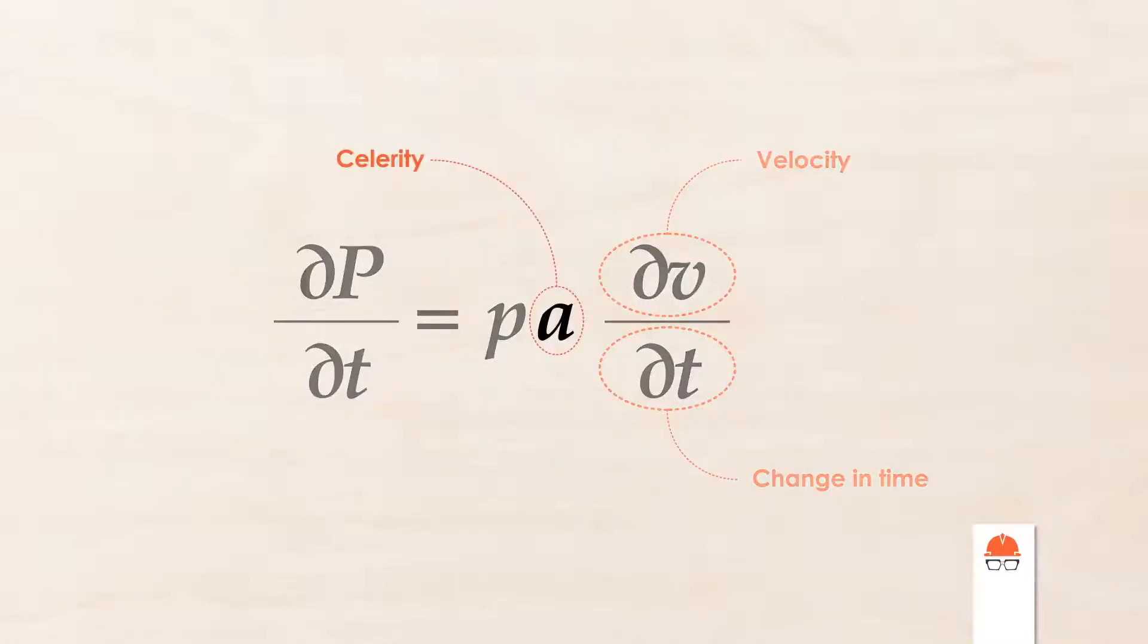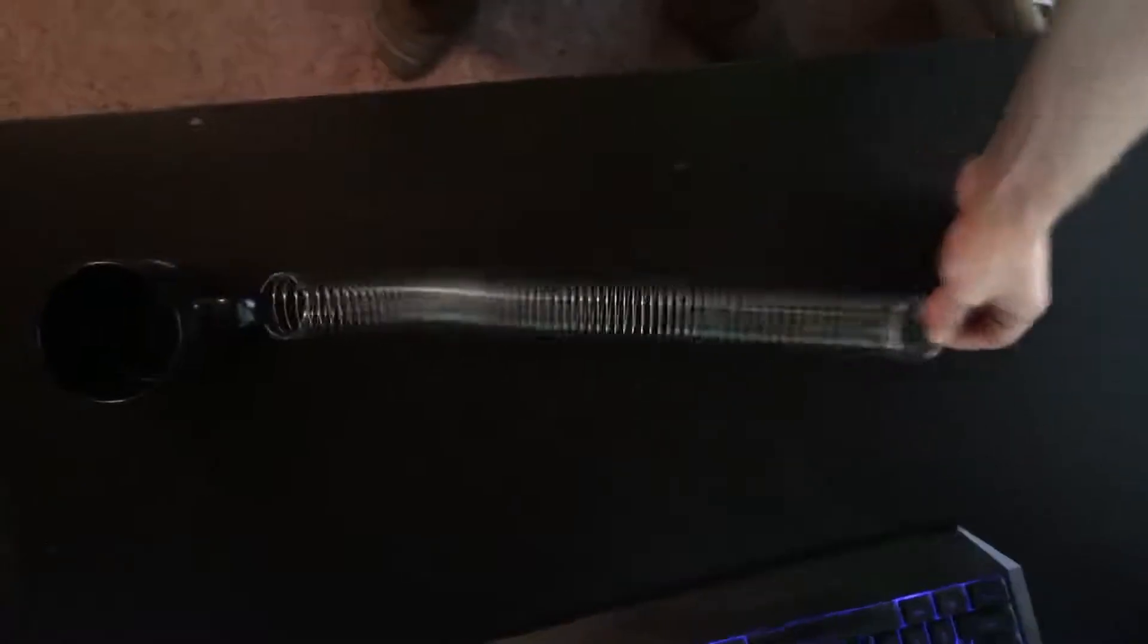The final parameter we can adjust is the speed of sound through the fluid, also known as wave celerity. This describes how quickly a pressure wave can propagate through the pipe. The wave celerity is an indirect measure of the elasticity of the system, and it can depend on compressibility of the fluid, the material of the pipe, and whether or not it's buried in the ground.